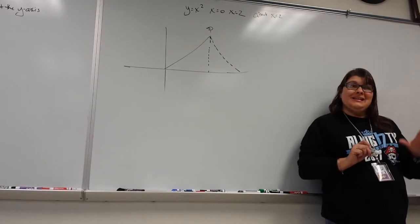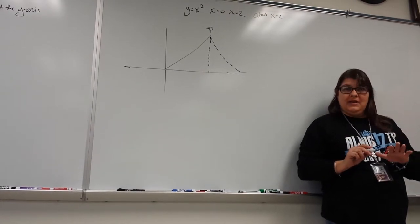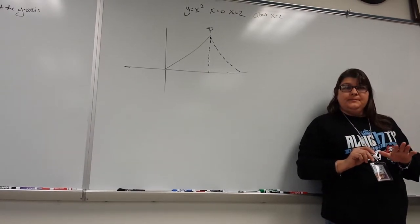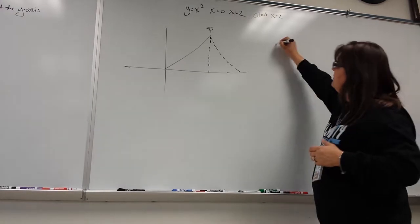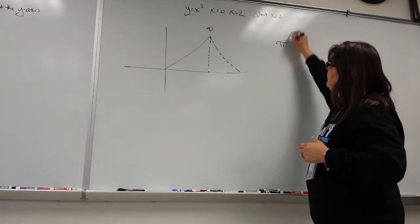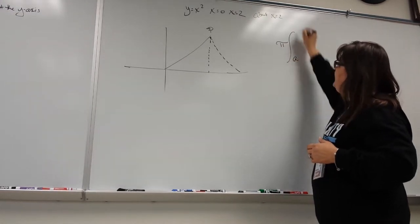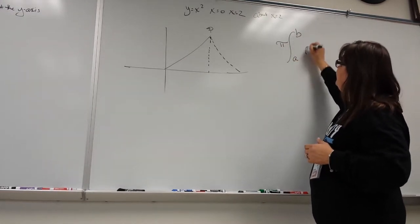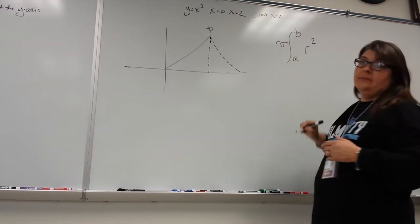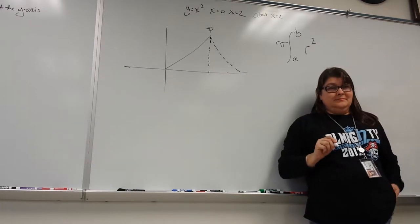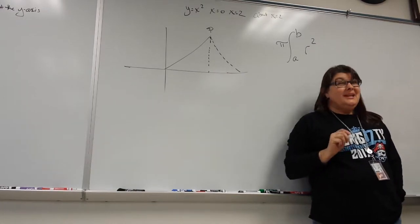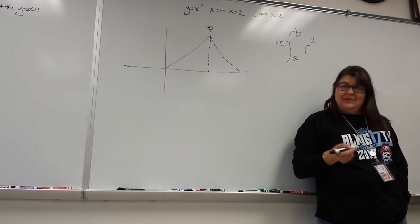So it's what we call the disk method: pi times the integral from a to b of r squared. And r is like ceiling minus floor, but in this case would be wall minus wall.